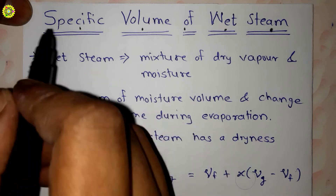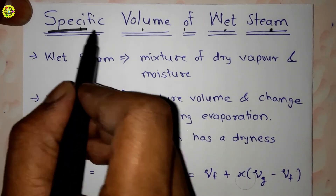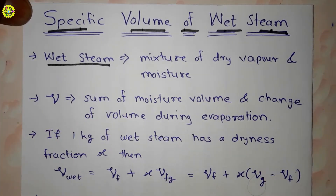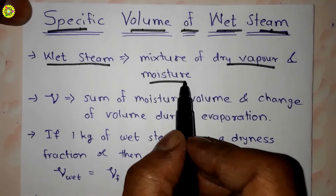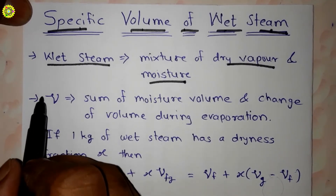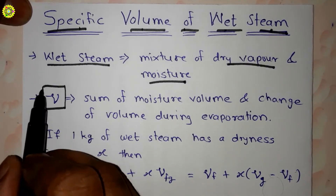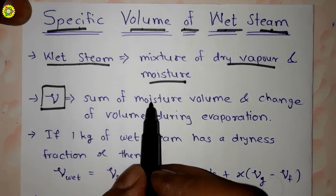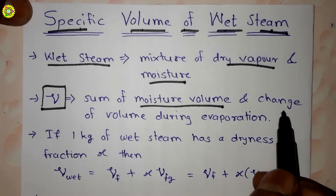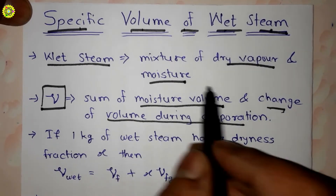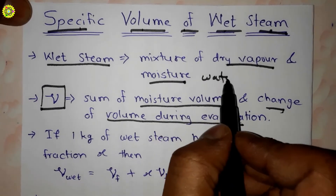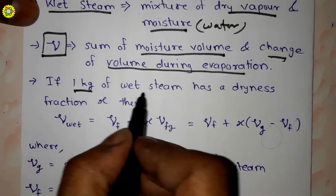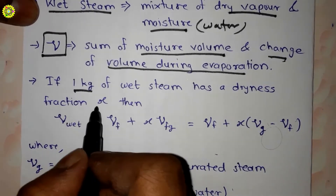Hi students, welcome. In this video we will understand the specific volume of wet steam. Wet steam is a mixture of dry vapor and moisture, and this specific volume is denoted by small v. The specific volume is the sum of moisture volume and change of volume during evaporation — here moisture means water. Suppose one kg of wet steam has a dryness fraction x.